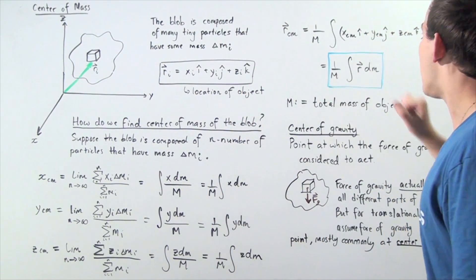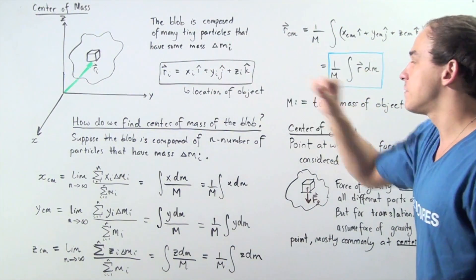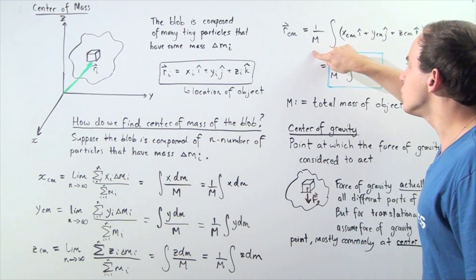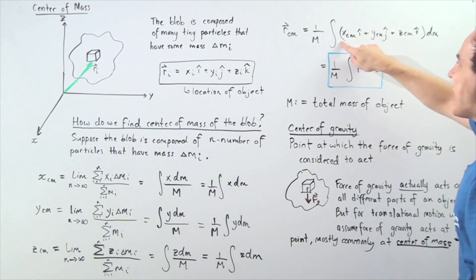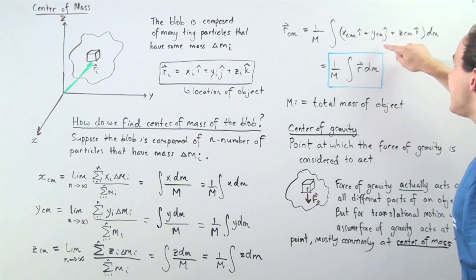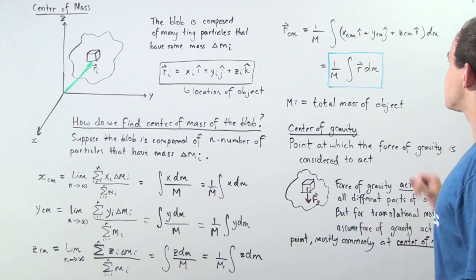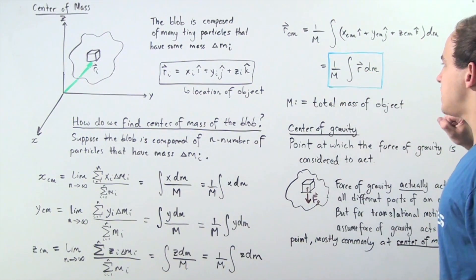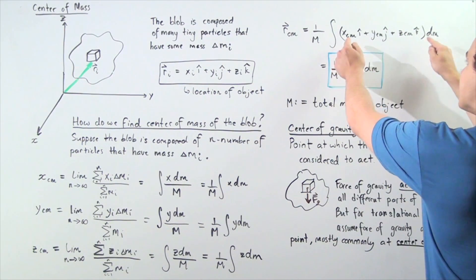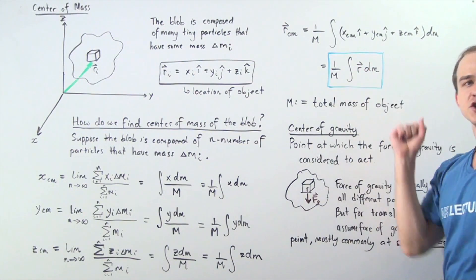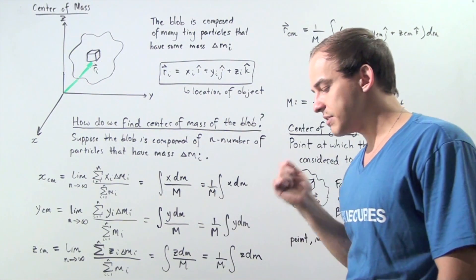So now to find the center of mass of the entire blob, we take all these coordinate points into consideration. We write: r_cm = (1/M) ∫(x_cm î + y_cm ĵ + z_cm k̂) dm, where cm stands for center of mass. This can be written compactly as (1/M) ∫r dm, where r is simply the full position vector and M is the total mass of the object.